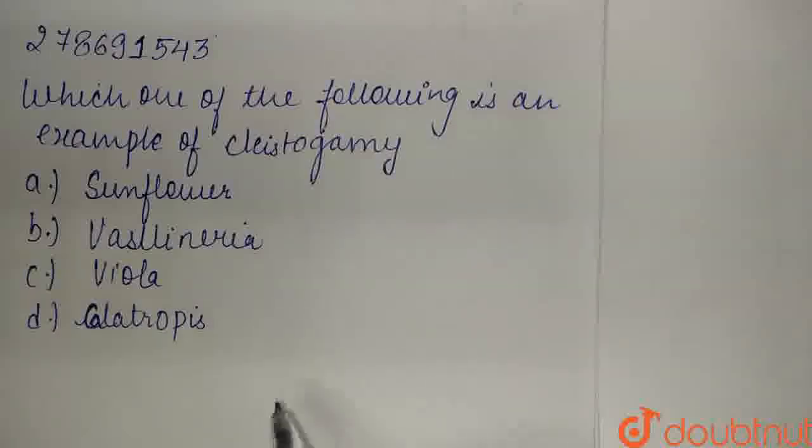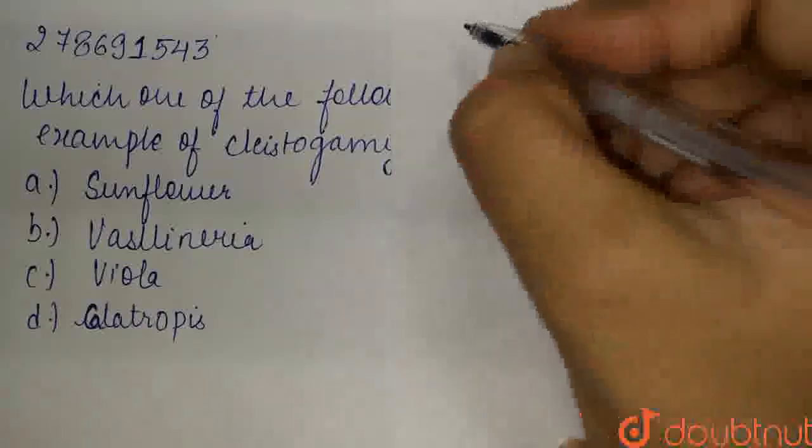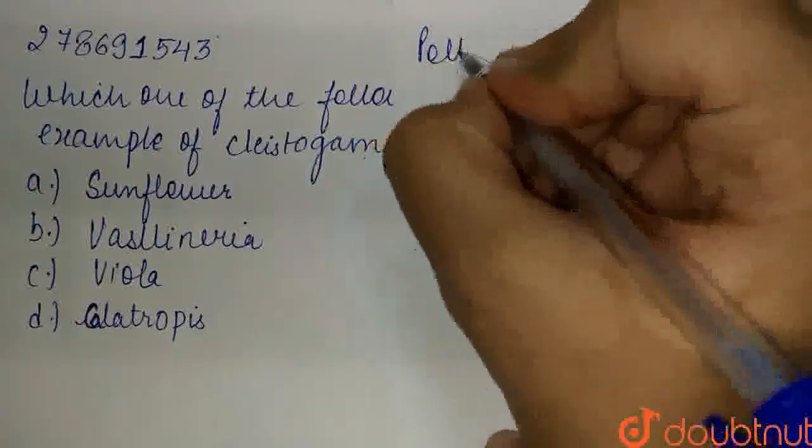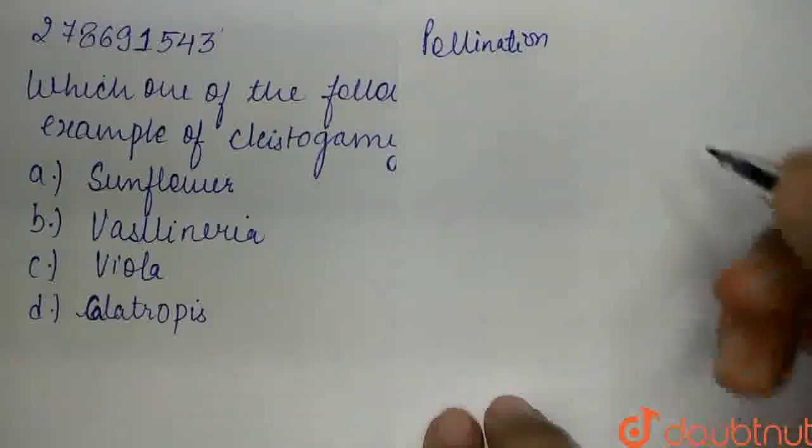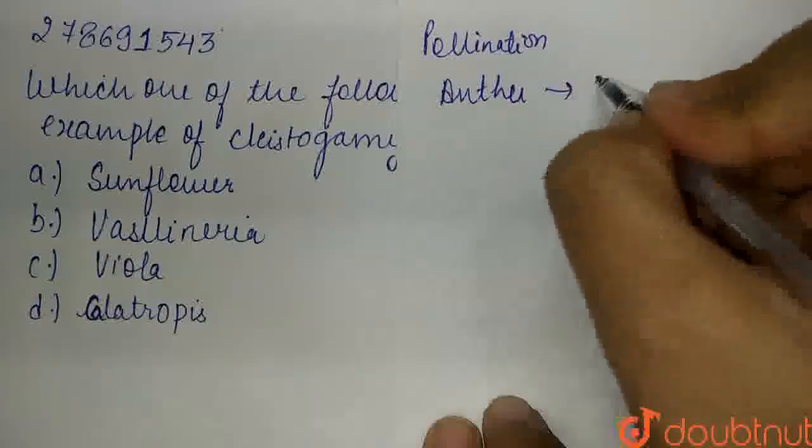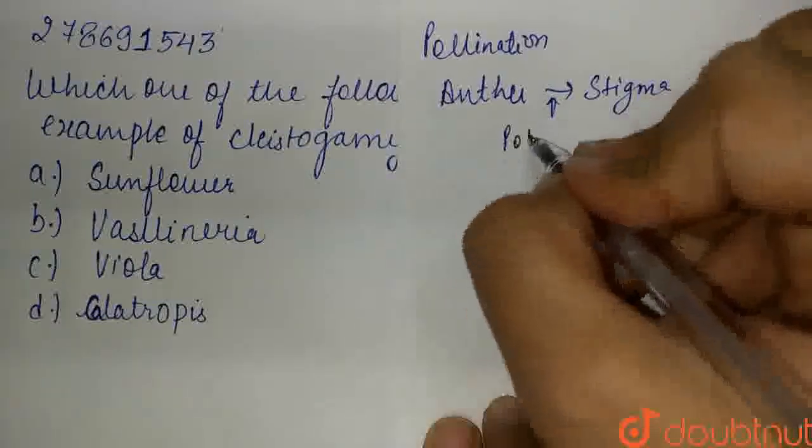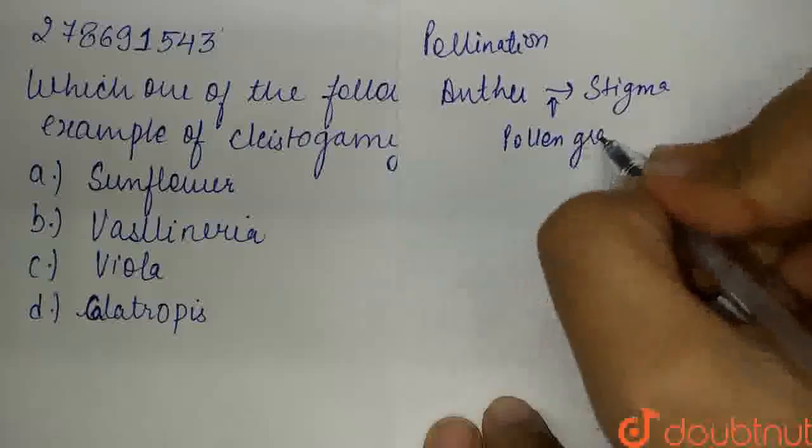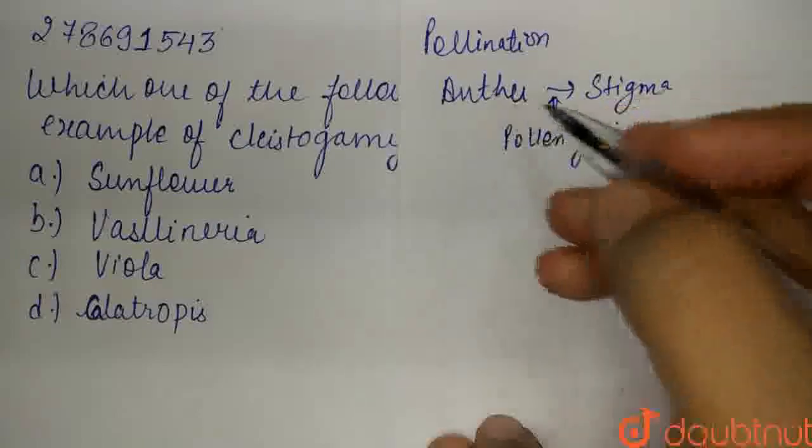So guys, we have been asked which of the given options is cleistogamy. Before answering this question, let's understand what pollination is. Basically, pollination is transfer of pollen grains from anther to stigma. So the pollen grains from the anther are transferred to the stigma - this is called pollination.